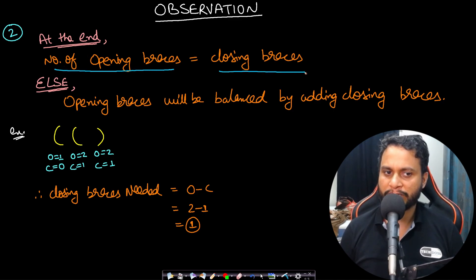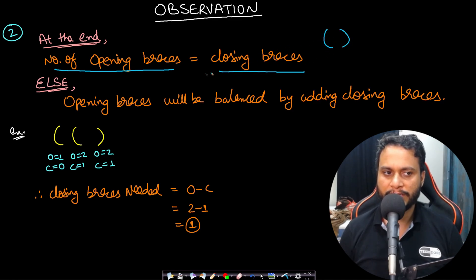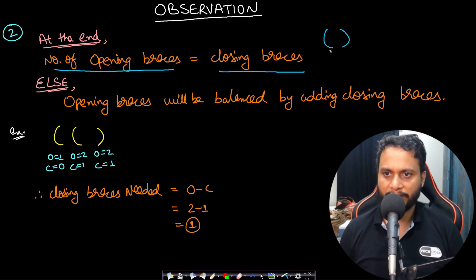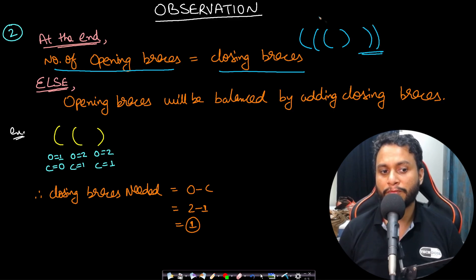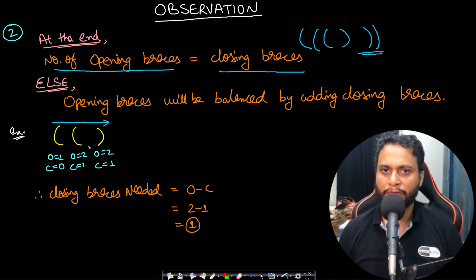In the second observation, at the end the number of opening braces must equal the number of closing braces, because every opening bracket needs to be balanced by a closing bracket. If the number of opening brackets is more than the closing brackets at the end, we need to add closing brackets to balance them out.